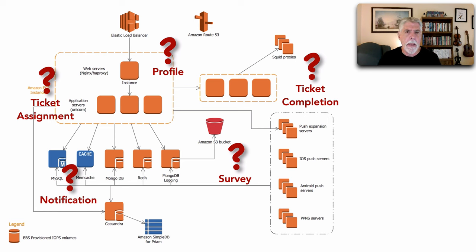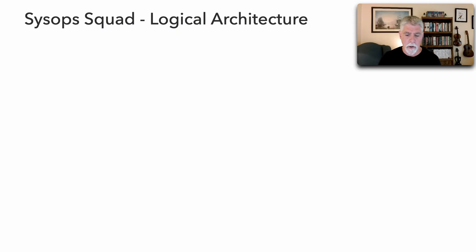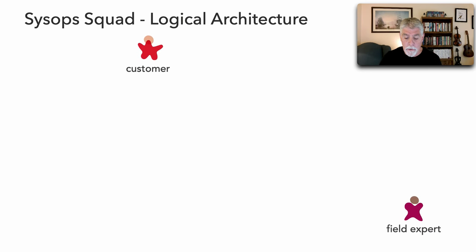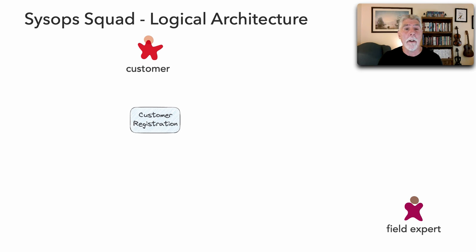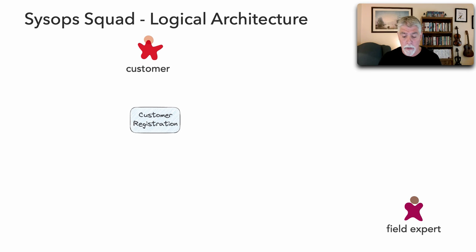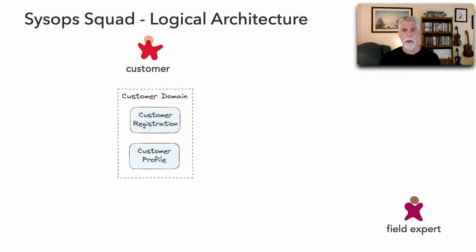This is what I mean by a logical architecture. When looking at a physical architecture we often lose sight of how the system internally works — and that's what a logical architecture shows. For example, customers need to register with the site, so I'll create a customer registration logical component. As discussed in lesson 177, this is a building block of the system. We also need a profile component, and I'll lump these two together into a customer domain.